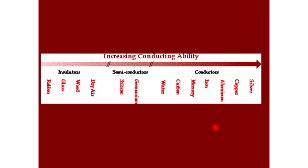This chart shows how you can organize all materials by their increasing conductive ability. As you move along the chart, materials become better and better conductors. Silver is a very good conductor — it lets electrons move through it easily. Rubber, on the other hand, is an insulator and does not let electrons move through it.